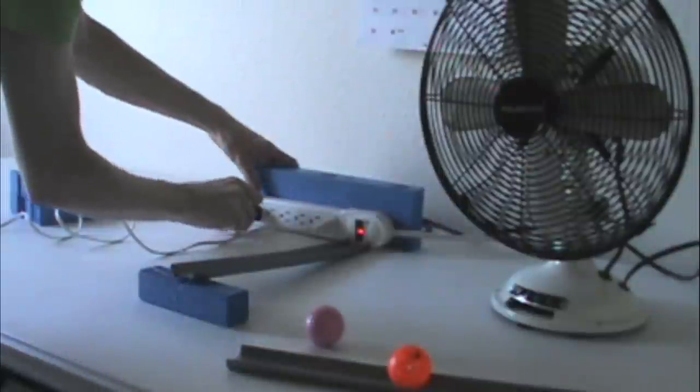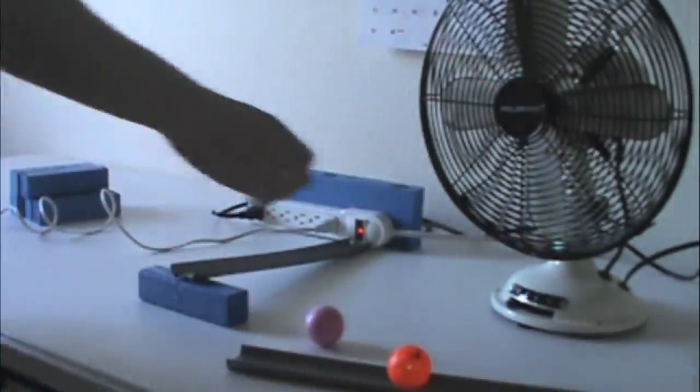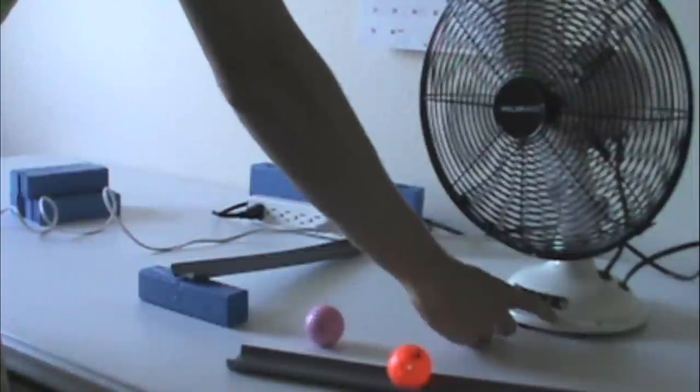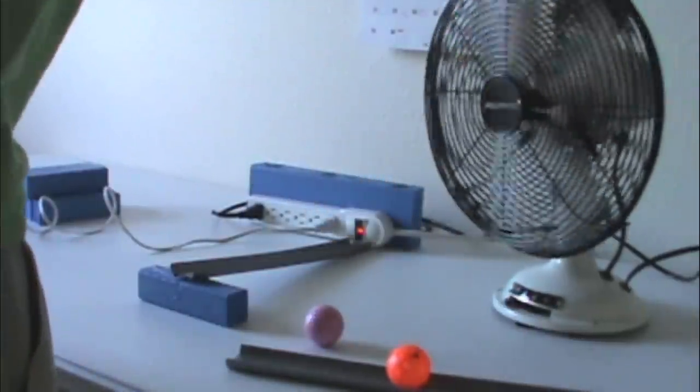For this example, I want a fan to push a ball across a ramp. The first step is turning the fan on. It would be pretty difficult to have a machine actually flip the switch of a fan, so to make things easier, I use the power strip to kick it on.